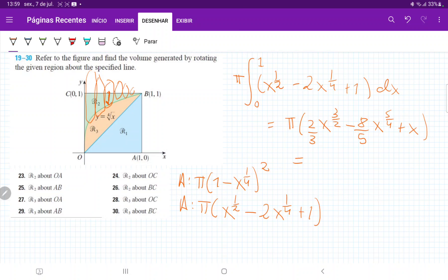And I can't forget to evaluate it from 0 to 1. So let's plug in our boundaries. That's pi times: when we plug in 1, this gives us two-thirds minus 8-fifths plus 1. When we plug in 0, it just goes 0, 0, 0, so we ignore that.